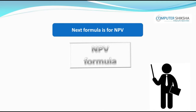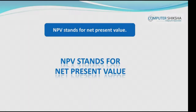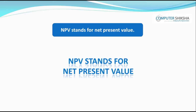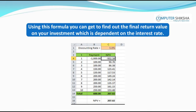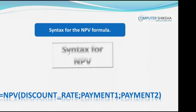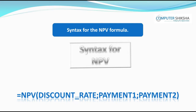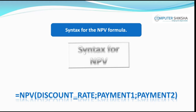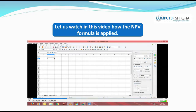The next formula is for NPV. Can you tell why the NPV formula is used? NPV stands for Net Present Value. Using this formula you can find out the final return value on your investment, which is dependent on the interest rate. The syntax is: =NPV(discount_rate; payment1; payment2; ...). Let us watch the video to learn more about usage of the NPV formula.